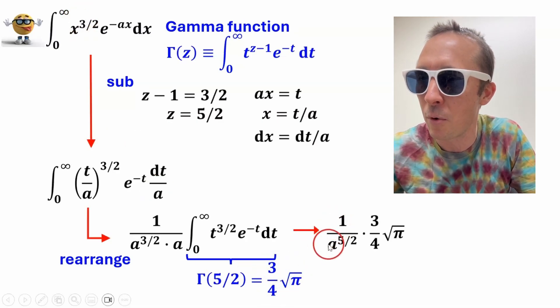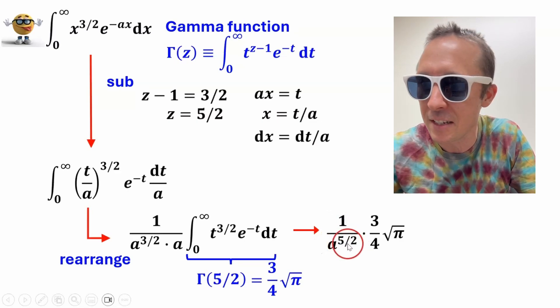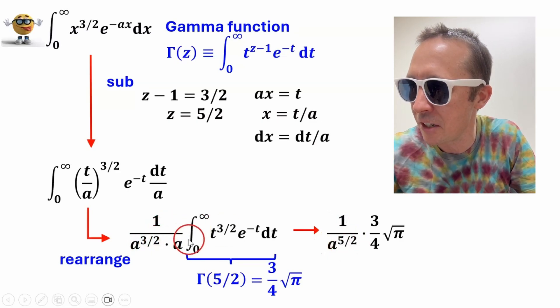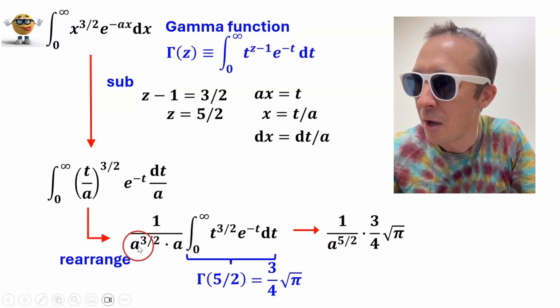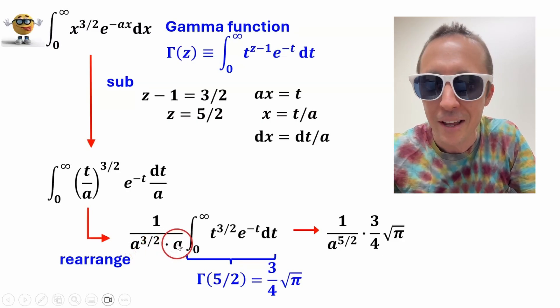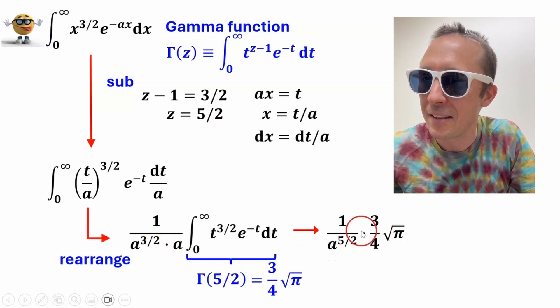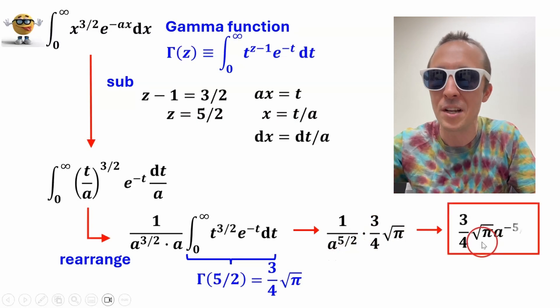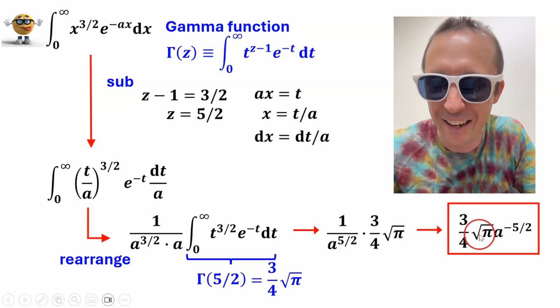so if we put all that together, we have 1 over a to the 5 halves, it's 5 halves because we have 3 halves here, and then there's a to the 1, when you multiply the bases, you add the exponents, and then this is the value of the gamma function, and we're done, there we are,